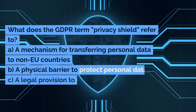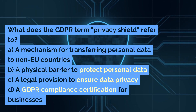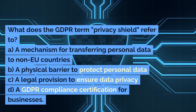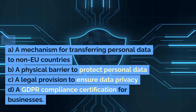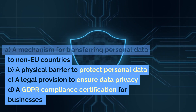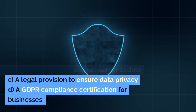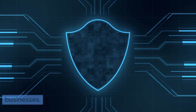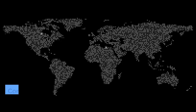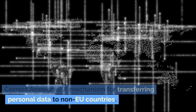What does the GDPR term 'Privacy Shield' refer to? A. A mechanism for transferring personal data to non-EU countries. B. A physical barrier to protect personal data. C. A legal provision to ensure data privacy. D. A GDPR compliance certification for businesses. Correct answer: A. A mechanism for transferring personal data to non-EU countries.